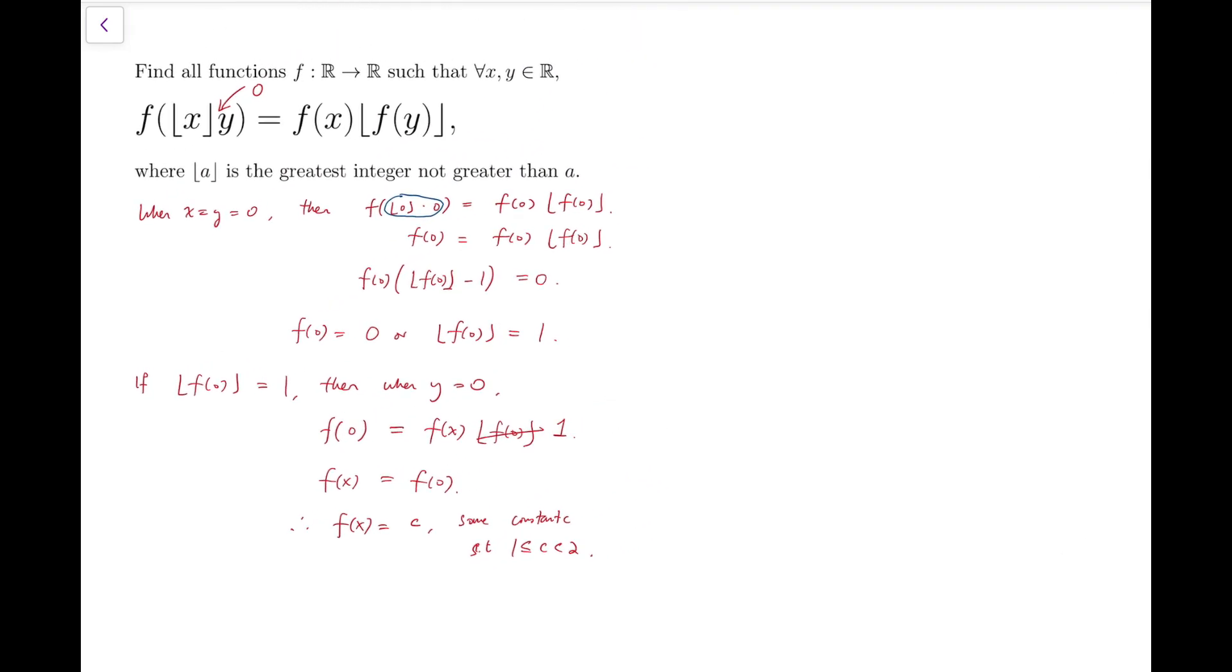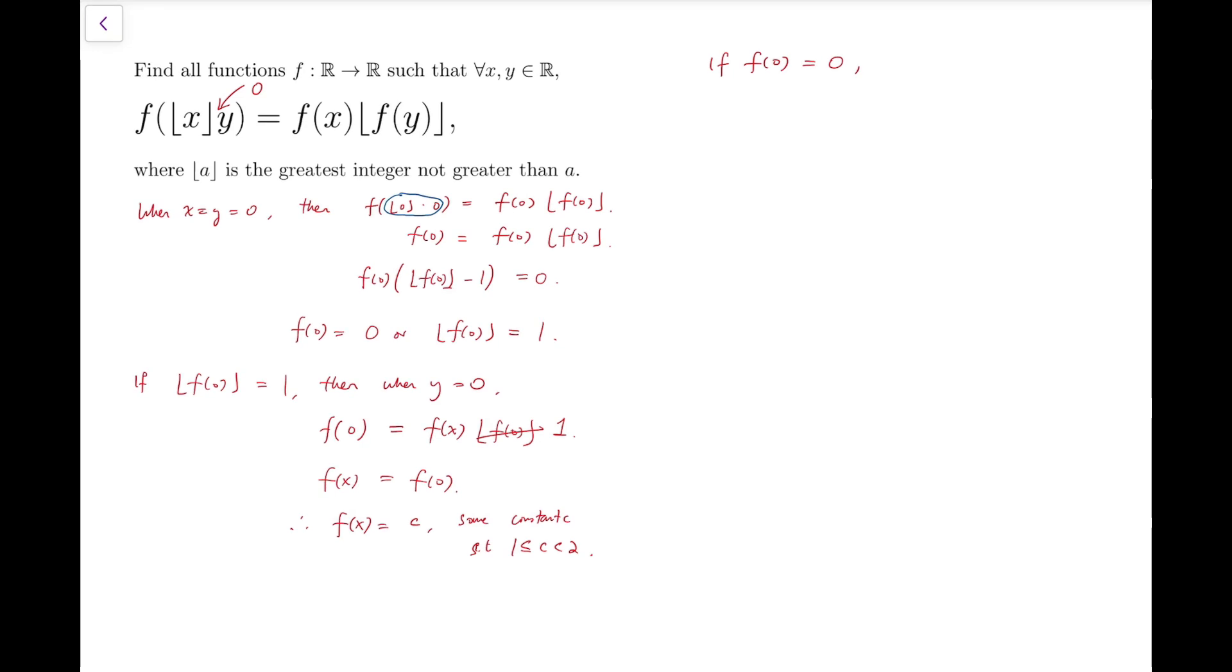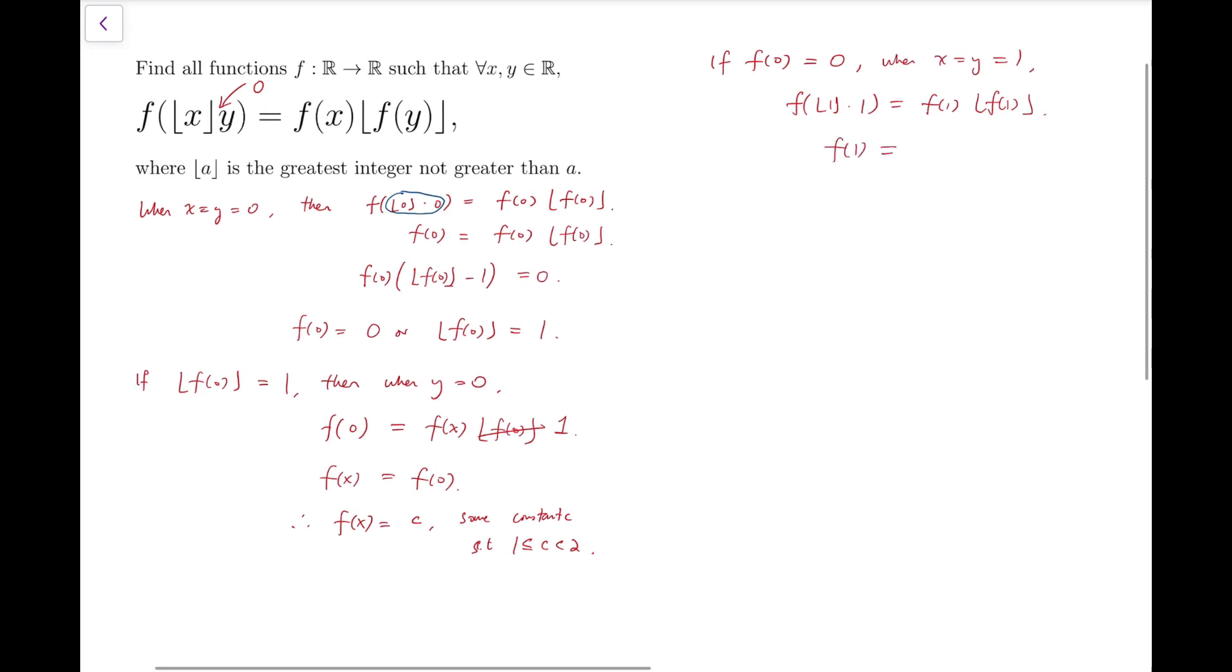Now we move on to the second case. If f of 0 equals 0, then we can try to put some other values into x and y, say 1. We have only tried 0. So when x and y are both 1, then f of floor function of 1 times 1 equals f of 1 times the floor function of f of 1. The effect is similar to the case when we put x and y to be both 0.